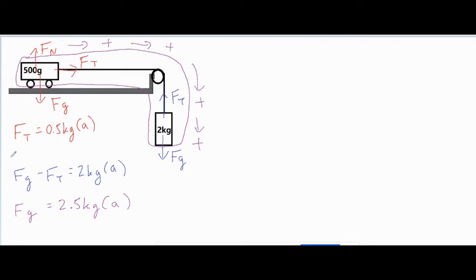I do have the FG, which is just 2 times 9.8 mg. And that gives us 19.6. I don't have FT because that's the same FT as that one. And I don't have my A.